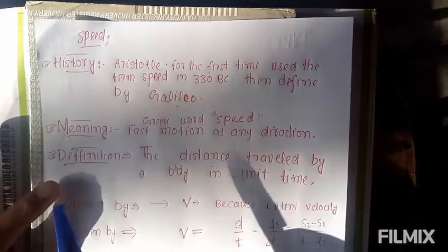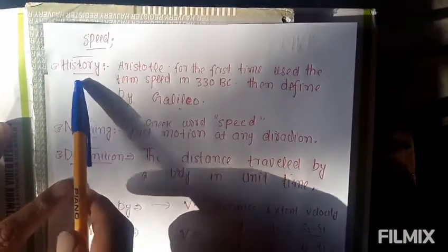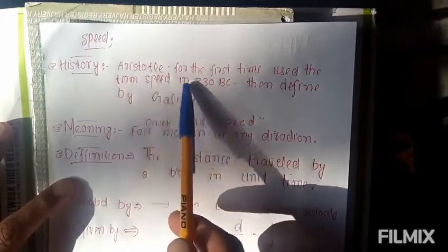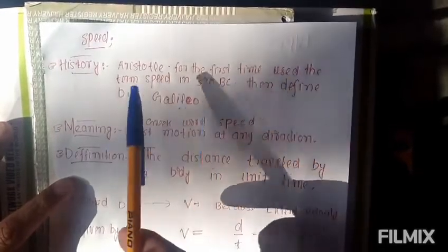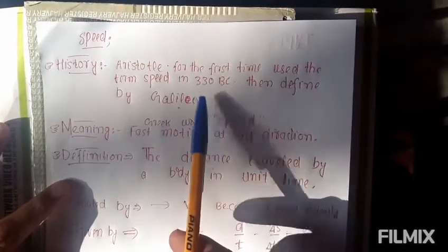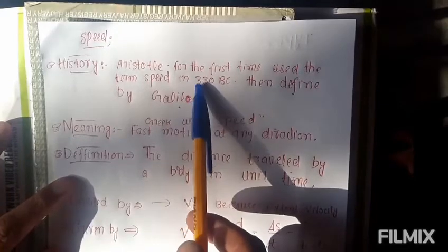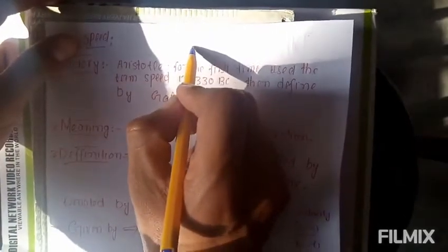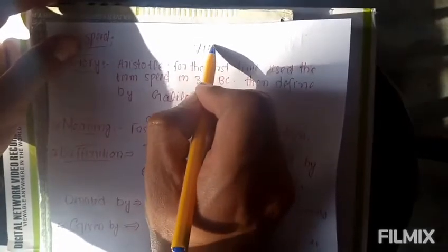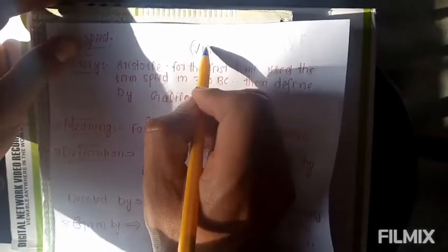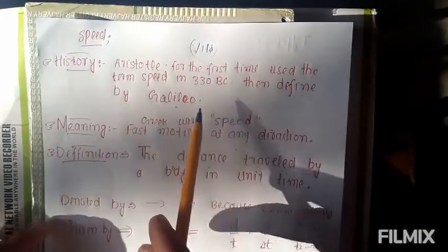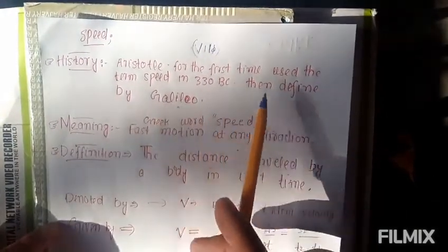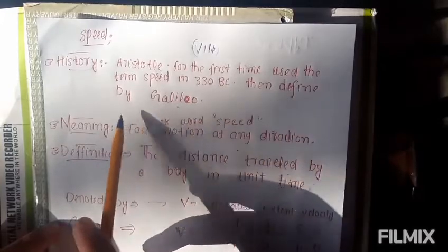So what is speed? First come to the historical background. Aristotle for the first time used the term speed in 330 BC. The book was volume second. Aristotle for the first time used the term speed, then after it was defined by Galileo.